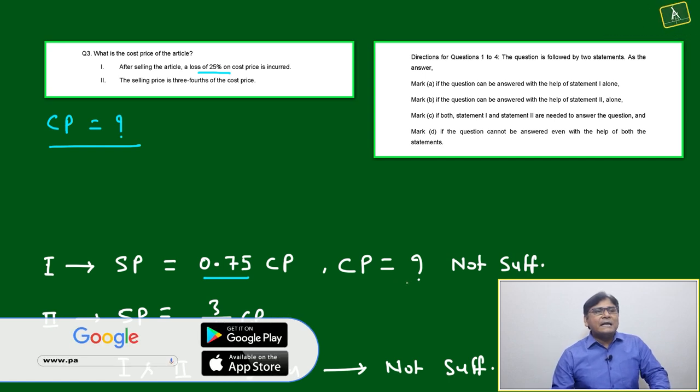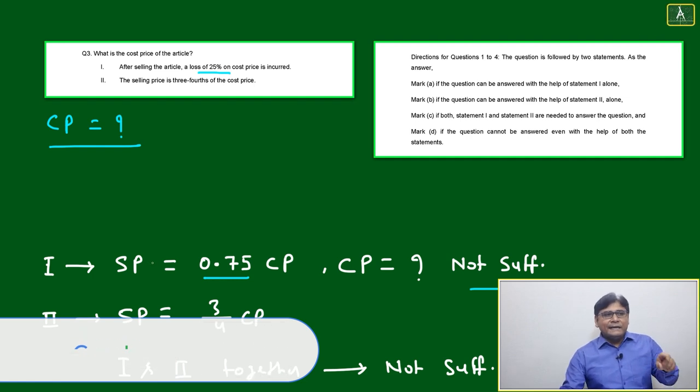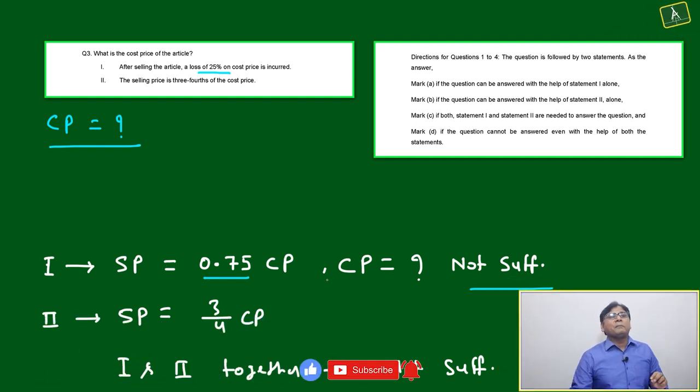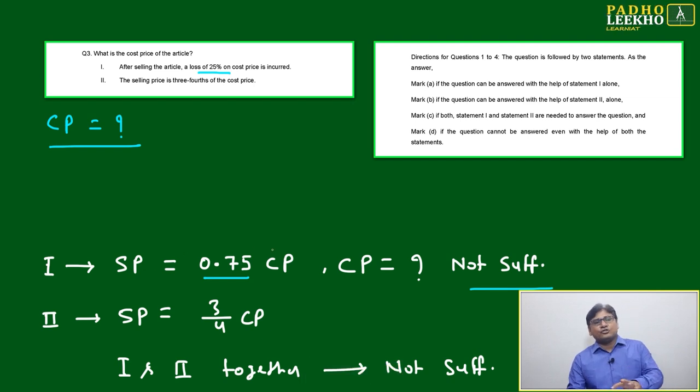Then cost price - how will we be able to find it? We will not be able to find it because other data is not there. If any data is given - what is the exact value of selling price - then we will be able to find. But here it is difficult to find because we don't have the exact idea about either selling price or cost price. If any one of the numbers is given, then based on this relation you will be able to find, but here not sufficient.